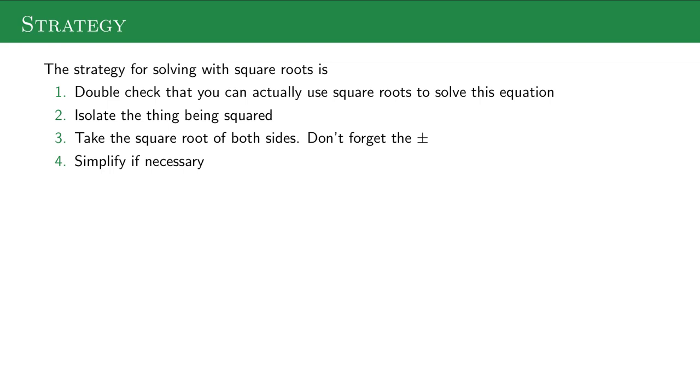When I'm doing the square root method, the first thing I do is double check to make sure you can actually do the square root method. Make sure it's not having that single x that'll mess it up. You're going to isolate the thing being squared. That means get it by itself on one side of the equal sign. Take the square root to cancel out the squared. Don't forget, when you take the square root of the equation, you have to do the plus or minus. And then simplify if it's not the final answer.